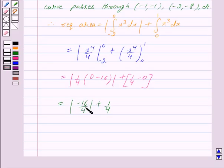Cancelling the common factor 4, we get 4 in the numerator. So we have modulus of -4 equals 4, plus 1/4, which equals 17/4.